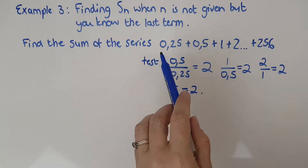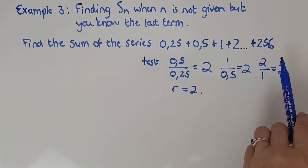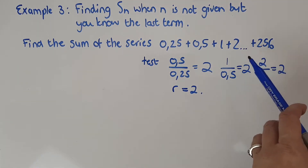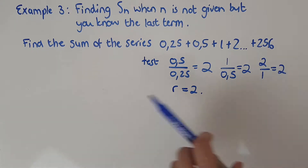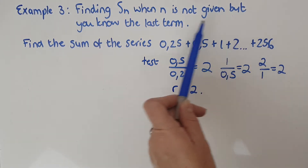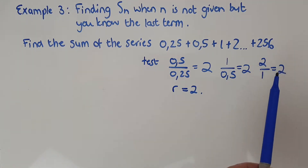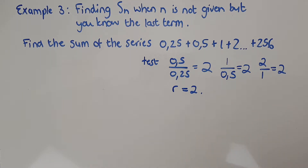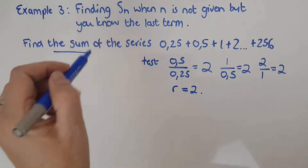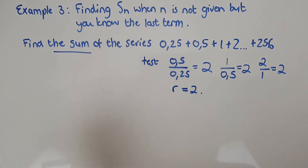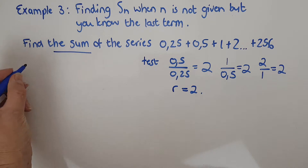I've been given this series and I can identify the last term because there's a dot dot dot and a plus something — they don't spell it out, but that's how the question would be phrased. With sequences and series, you're always trying to decode what they actually want from you. They want the sum, so I'm going to have to use the sum formula, but I might not start there.